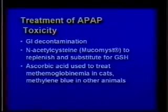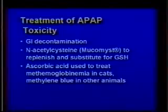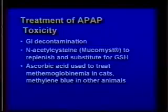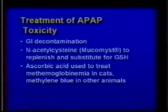To treat acetaminophen poisoning, if you reach the animal soon after ingestion, GI decontamination by emesis or gastric lavage followed with activated charcoal is very effective. If symptoms have begun, treatment consists of N-acetylcysteine, sold as Mucomyst, to replenish and substitute for glutathione, providing another substrate to detoxify the reactive intermediates. Especially in cats, extensive methemoglobinemia must be treated — administer ascorbic acid to reduce methemoglobin in cats. In other animals, use methylene blue to reverse methemoglobinemia.